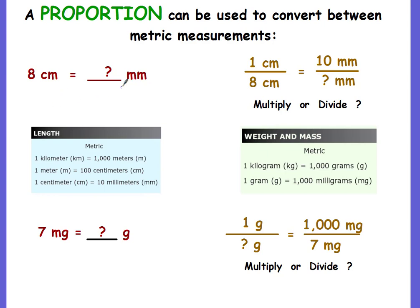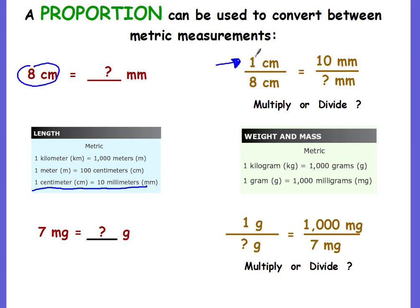We want to convert centimeters to millimeters. The first thing you want to do is look at your chart and find the unit rate. Which one is larger — centimeters or millimeters? It's centimeters. The chart tells us one centimeter equals 10 millimeters. This is our unit rate, and we start our proportion with it: write it horizontally — one centimeter equals 10 millimeters — this goes on the top part of your proportion.